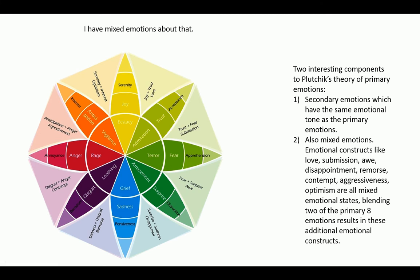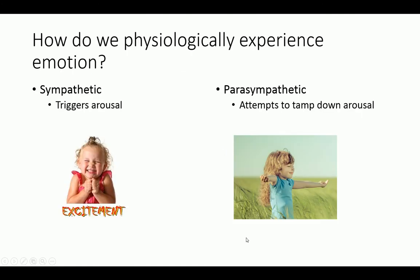One of the interesting things about Plutchik's model is that it allows us to see what some of those combinations — those mixed emotions — actually are. According to Plutchik's model, love is literally a mixed emotion between joy and trust. Remorse is literally a mixed emotion between sadness and disgust. Awe is what happens when we experience fear and surprise. These are liminal states in between the primary emotions. That negative space between the spokes of the wheel is also emotional space — a combination of two emotions that constructs a new secondary emotional state.